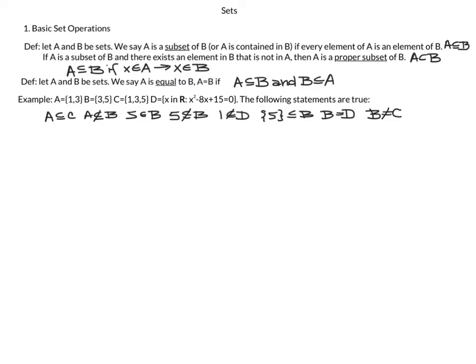Our next definition: let A and B be sets. We say A equals B if A is contained in B and B is contained in A. This is the definition you will use for set equality. If you want to show two sets are equal, you need to show two things: A is contained in B, and B is contained in A. You have to show the two sets satisfy the definition — which is why you have to memorize these definitions.